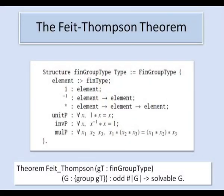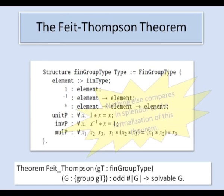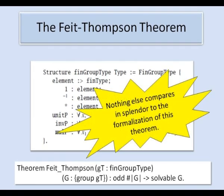Just to give a flavour for anybody who remembers a little group theory, this is the computer representation of the structure of a finite group. And if you remember the axioms of a group, the closure identity, associativity, identity and inverse, these may remind you of that. And here's a statement of the result that the computer proved. Thomas Hales has written of this that to me as a mathematician nothing else that has been done by the formal proof community compares in splendour to the formalisation of this theorem.